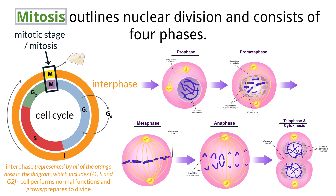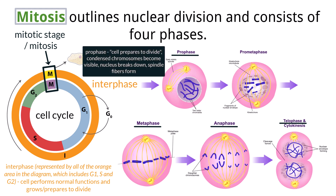Think of prophase as the cell preparing to divide. The chromatin becomes visible as it becomes more tightly coiled to form chromosomes. The spindle fibers form and the centrosomes move to the poles of the cell. The nuclear membrane begins to disappear, as does the nucleolus. Think of metaphase as middle. The chromosomes move to the equator of the cell, called the metaphase plate, where the centromeres line up and the spindle fibers attach to the kinetochores. The centrosomes are at opposite poles of the cell.